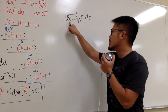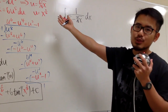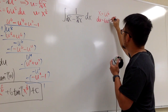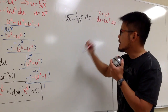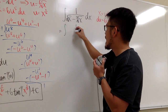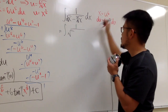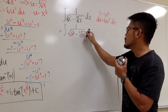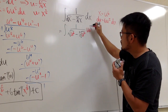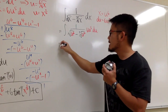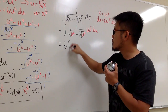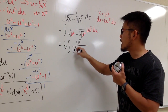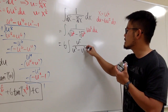Now let's work out the second integral. We have a square root and a cube root, so we use the same strategy: x = u to the 6th power and dx = 6u to the 5th du. Substituting, we get the integral of 1 over (square root of u⁶ minus cube root of u⁶), times 6u to the 5th du. Simplifying: 6 times the integral of u to the 5th over (u cubed minus u squared) du.